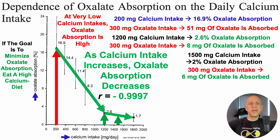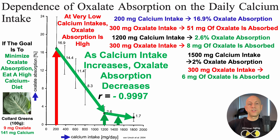So if the goal is to minimize oxalate absorption, we can eat a high-calcium-containing diet — and that doesn't have to mean eating dairy. For example, I eat a lot of collard greens, which have a very small amount of oxalate (9 mg per 100 g) relative to other greens like spinach, but also have 141 mg of calcium. Eating about a pound of collard greens a day gives me about 600 mg of calcium with only about 40 mg of oxalate — a net 560 mg advantage for calcium relative to oxalate.